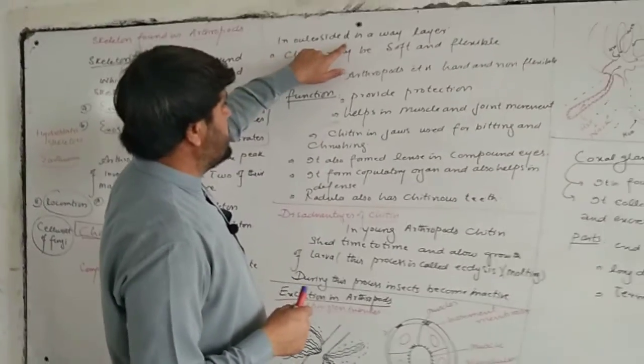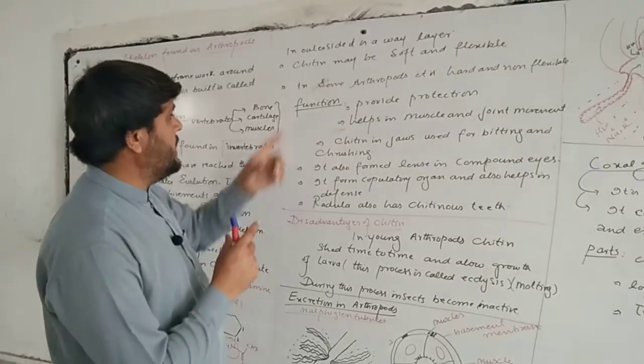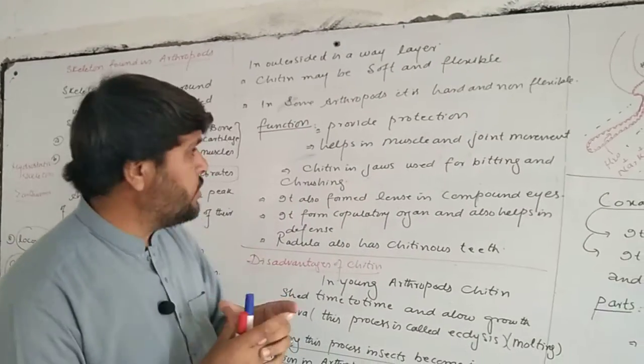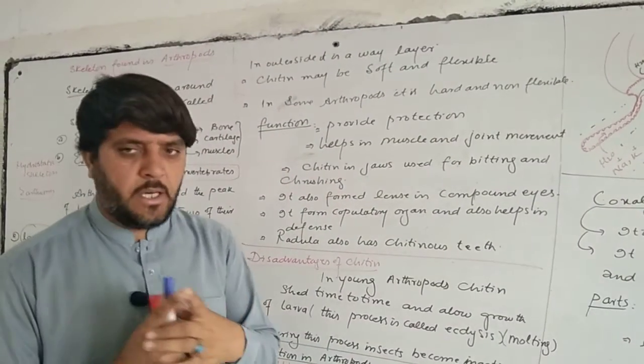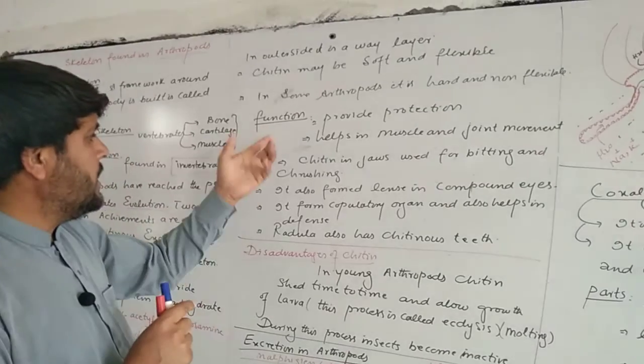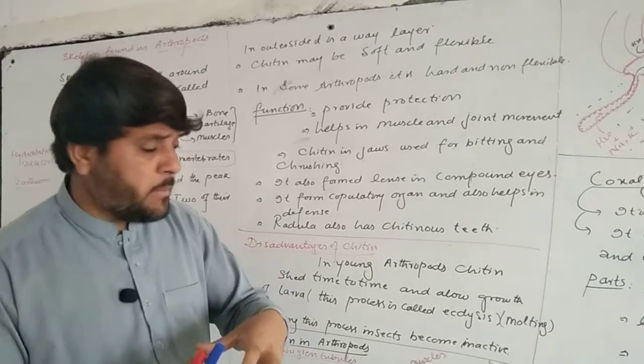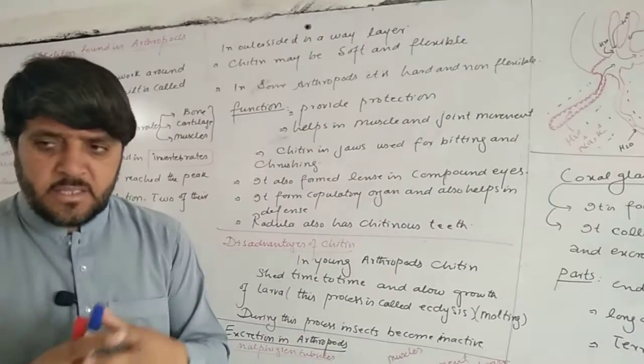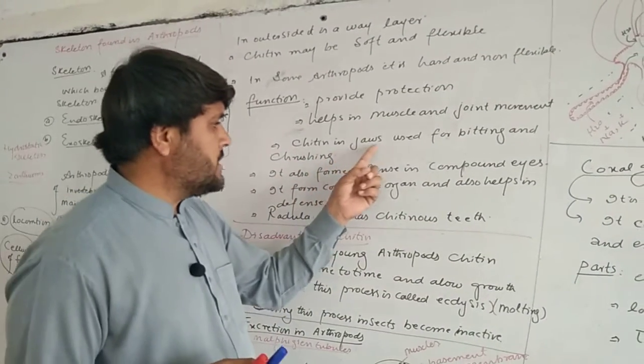On the outer side of the body, chitin may be soft and flexible, and in some arthropods it is hard and non-flexible. It provides protection to the internal body parts. It helps in muscle attachment and movement.